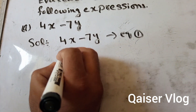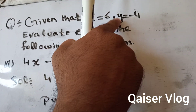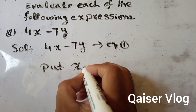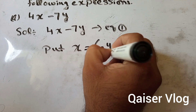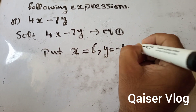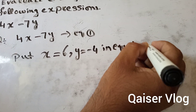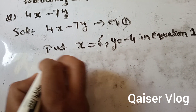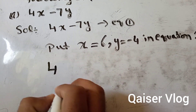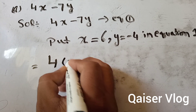Now in equation 1, we put x = 6 and y = -4. We have to write this statement: put x equal to 6, y equal to -4 in equation 1. Now we replace the values — x will be 6, so we write 4 bracket 6.